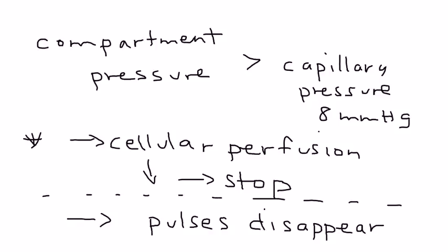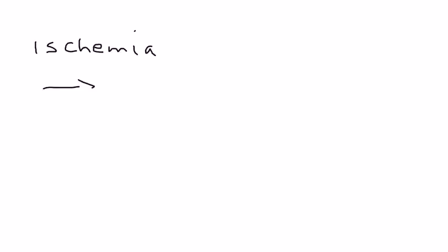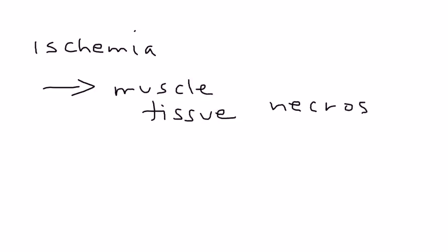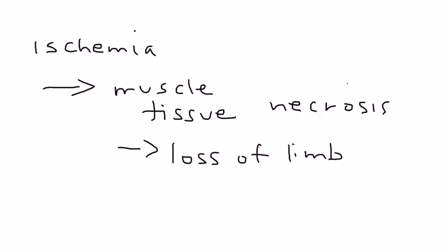When these muscles and tissues are not getting enough blood, severe problems arise. Those include ischemia — decreased blood flow — which eventually leads to muscle and tissue necrosis, essentially death of the cells. If serious enough, it could mean loss of limb. This sequence of events is very important to remember.